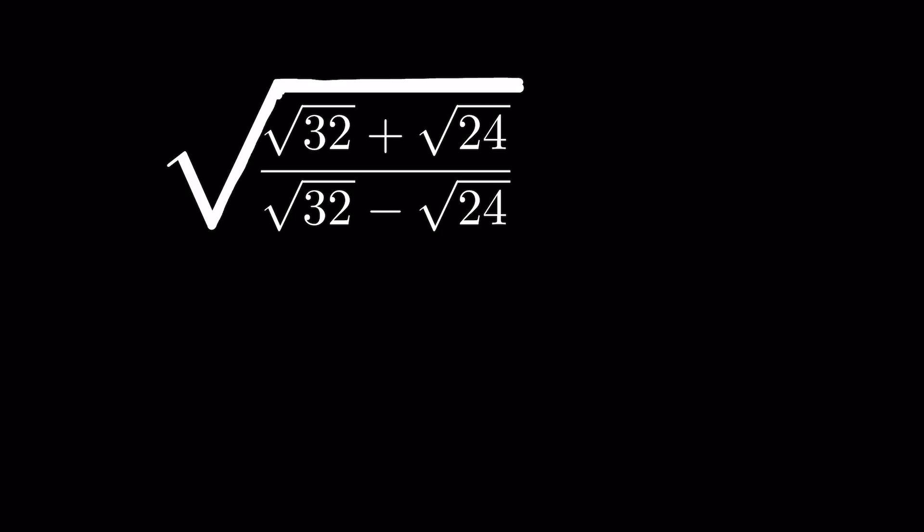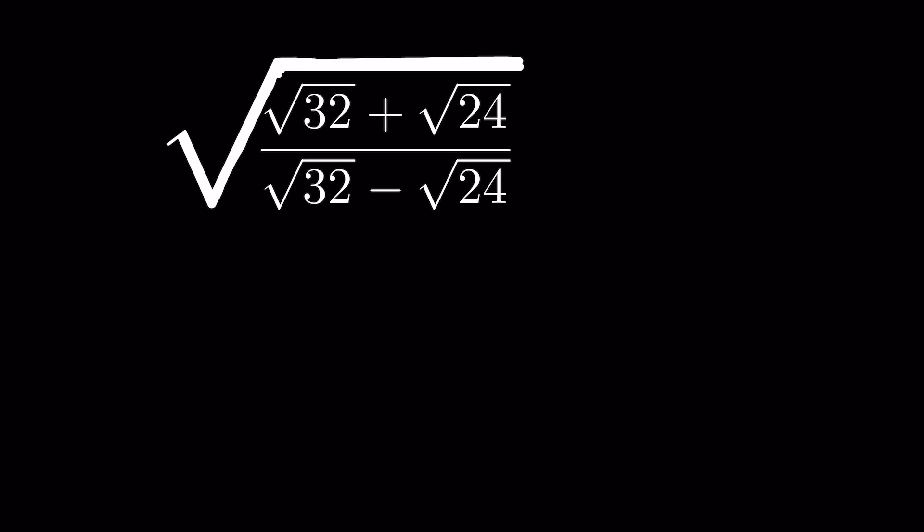Square root of 32 plus square root of 24 upon square root of 32 minus square root of 24, all under a square root. We have to simplify it, so let's first simplify the radicals.